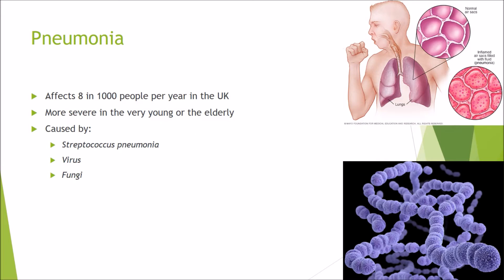Pneumonia affects 81,000 people per year in the UK and is more severe in the very young or elderly, because their immune systems are impaired. In the very young the immune system is immature; in the elderly it is declining in efficiency. The main causative agent of pneumonia is Streptococcus pneumoniae, though it can also be facilitated by viruses and fungi.